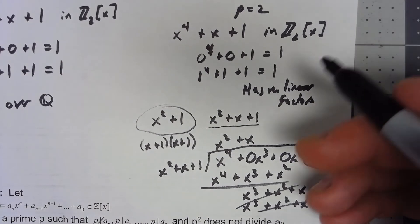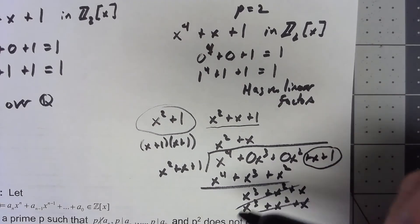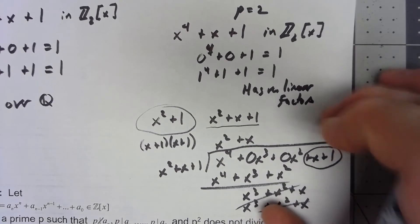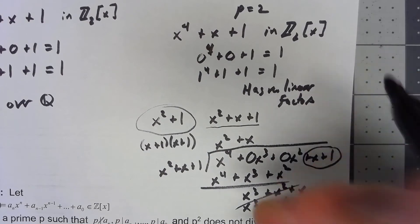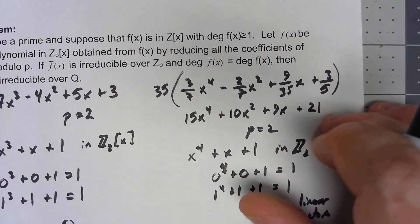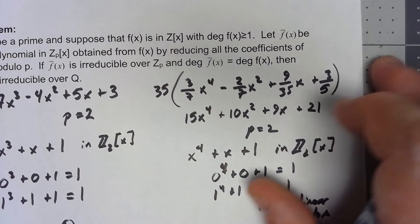Because I've got a remainder, it doesn't divide in. So there we go. A lot harder to check that it was irreducible in Z₂[x], but still it was irreducible in there, so that must mean the original polynomial was irreducible in Q[x].